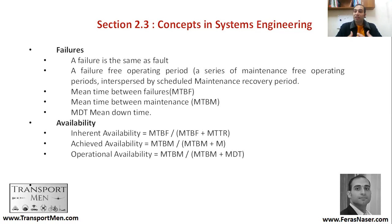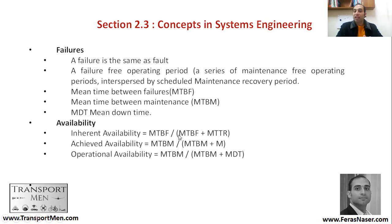This helps you understand reliability, but also availability — how available is this railway system? Inherent availability equals mean time between failures divided by (MTBF plus mean time to repair). Achieved availability equals mean time between maintenance divided by (MTBM plus maintenance). Operational availability equals mean time between maintenance divided by (MTBM plus mean downtime).